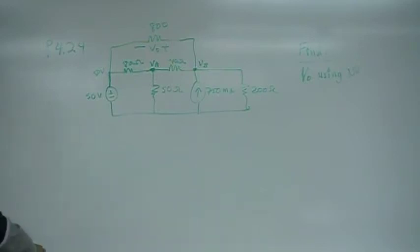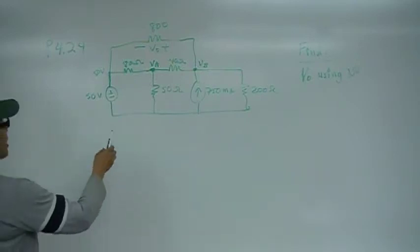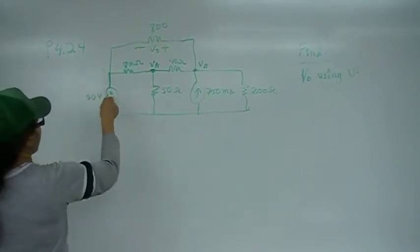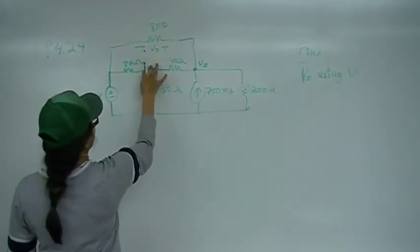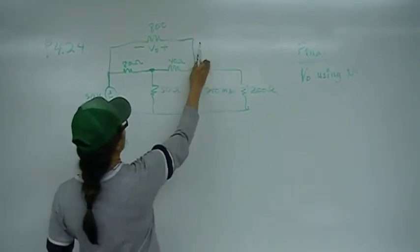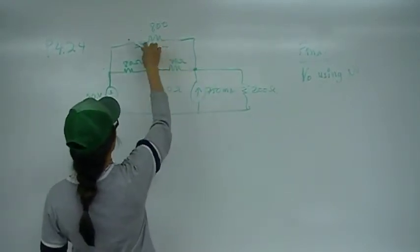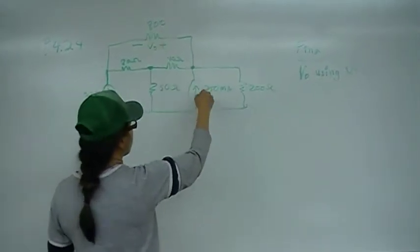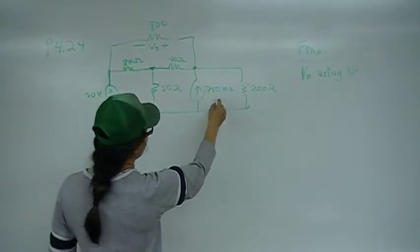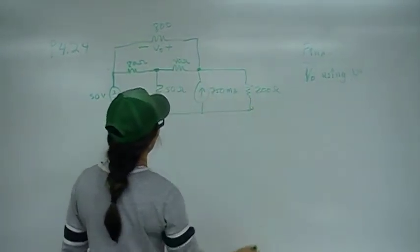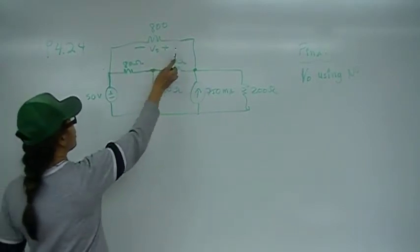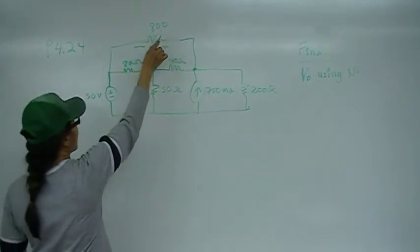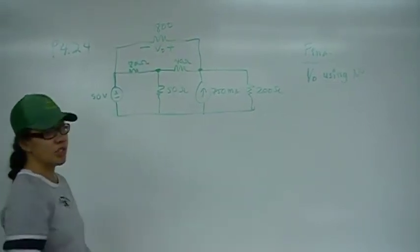This is problem number 24 from chapter 4, and we have the following circuit. We have 50 volts here, 80 ohms here, 50 ohms here, 40 ohms here, 800 ohms here, a 750 milliamp current source, and 200 ohms there. We're asked to find the voltage drop across the 800 ohm resistor using the node voltage method.